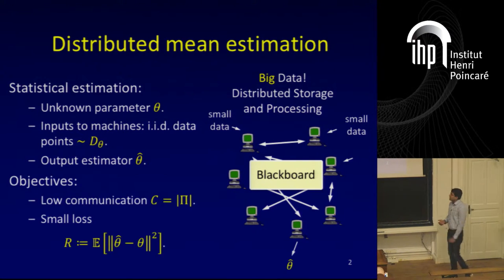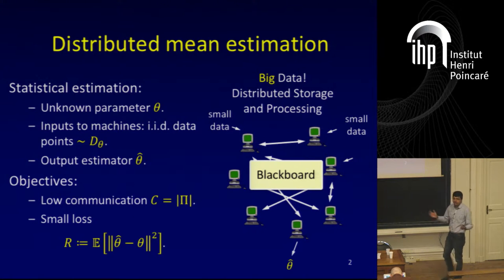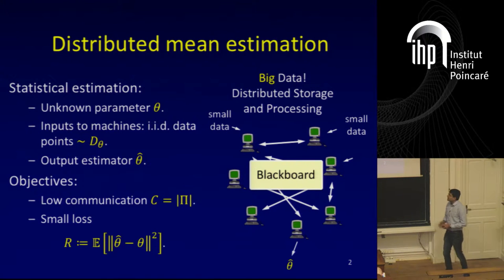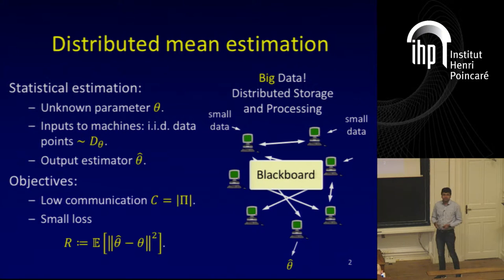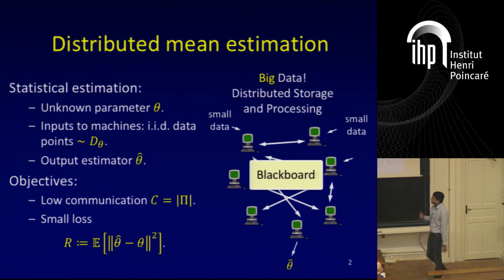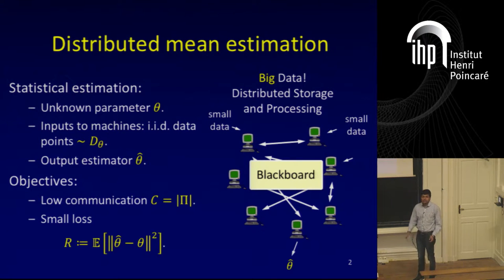They have two objectives: they want to keep the communication cost as low as possible — the communication cost is the number of bits written on the blackboard or broadcasted — and they want to minimize the square loss, defined as the expected L2 norm squared distance between theta-hat and theta. So given IID samples from the distribution d-theta, they want to estimate what theta is.